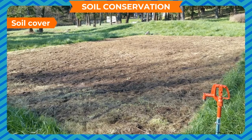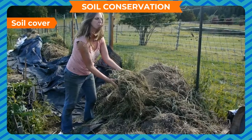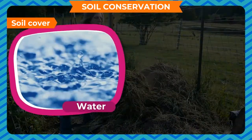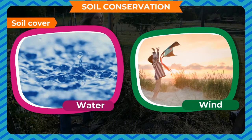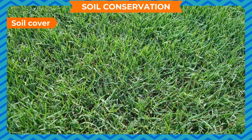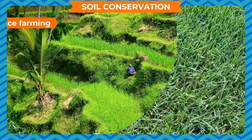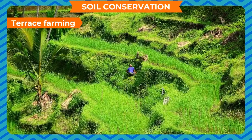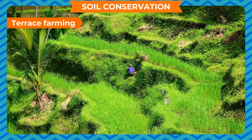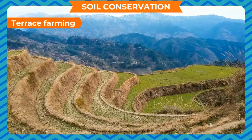When the soil becomes bare after harvesting a crop, it may get eroded by water and wind. This erosion can be prevented by planting grass or covering the land with vegetation.